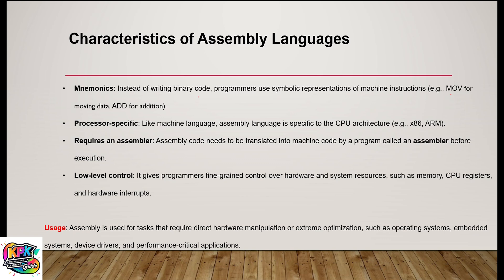Third, it requires an assembler — before the processor can execute assembly code, the assembler must convert it into machine code. Fourth, it provides low-level control, giving programmers fine-grained control over hardware and system resources such as memory, CPU, registers, and hardware. Assembly language is used for tasks that require direct hardware manipulation or extreme optimization, such as operating systems, embedded systems, device drivers, and performance-critical applications.